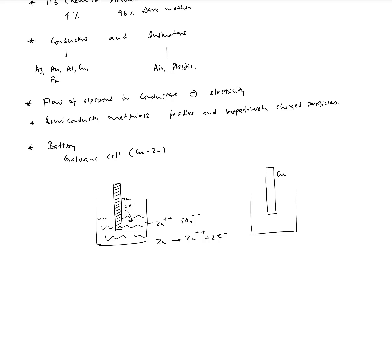This is the copper-zinc galvanic cell. The second container has a copper electrode dipped in an aqueous solution of copper ion and sulfate ion. Copper also releases copper ions and two electrons into the solution. As the reactions continue in each container, zinc ions accumulate in container one and copper ions are released in container two. Electrons deposit on both the zinc and copper electrodes.